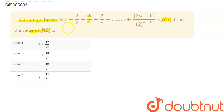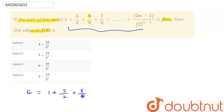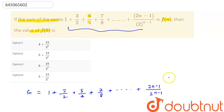Let us write Sₙ: Sₙ = 1 + 3/2 + 5/4 + 7/8 + ... + (2n−1)/2^(n−1). Now, if we multiply both sides by 1/2, we shift the terms one place so their denominators align.